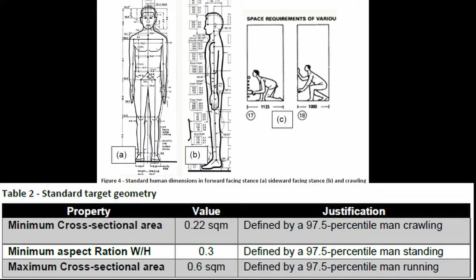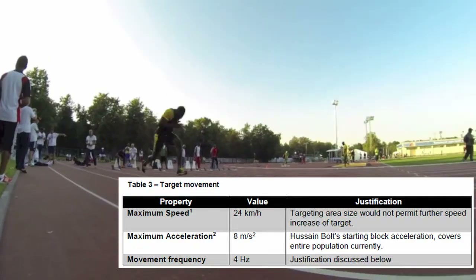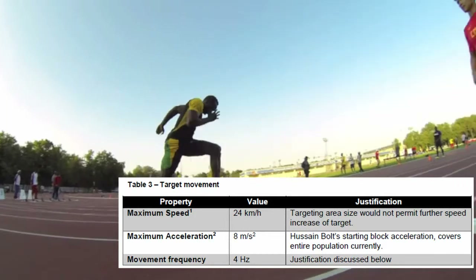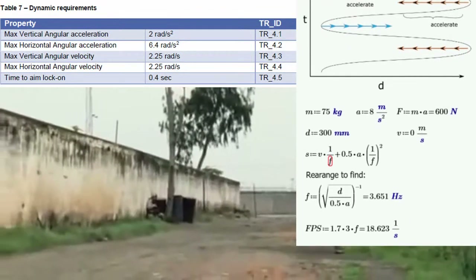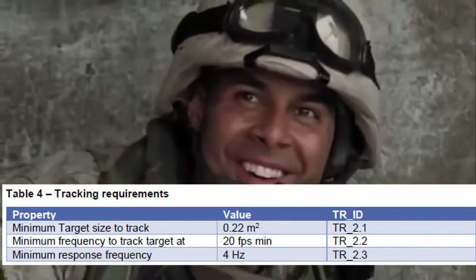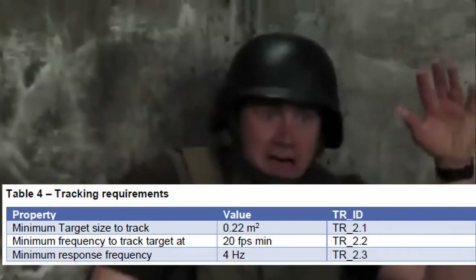We define the objects of interaction — the main object here is obviously the human. We sourced ergonomic geometric data on human specimens: cross-sectional areas, aspect ratios, and so on. We figured out how fast a person can run and accelerate, using Usain Bolt's starting block acceleration to cover the entire population. We then worked out how fast a person can actually dodge, and it came out to a response frequency of about 4 Hz — that's actually 2 Hz doubled for safety margins.